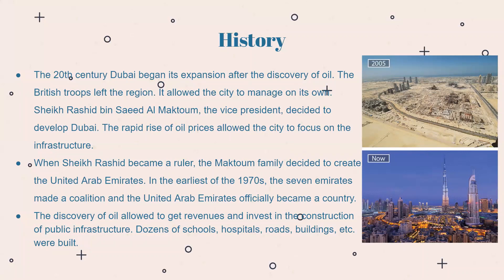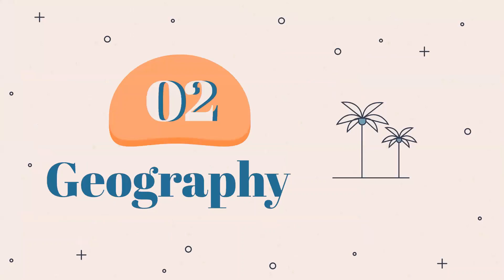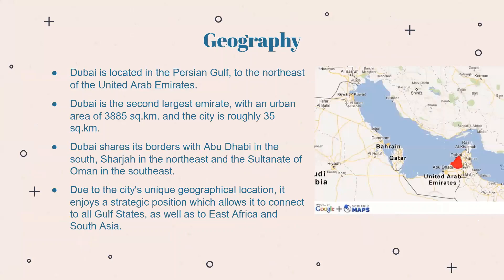When Sheikh Rashid became ruler, the Maktoum family decided to create the United Arab Emirates. In the early 1970s, the seven emirates formed a coalition and the UAE officially became a country. The discovery of oil allowed revenues to be invested in the construction of public infrastructure — dozens of schools, hospitals, roads, buildings, and many more were built.